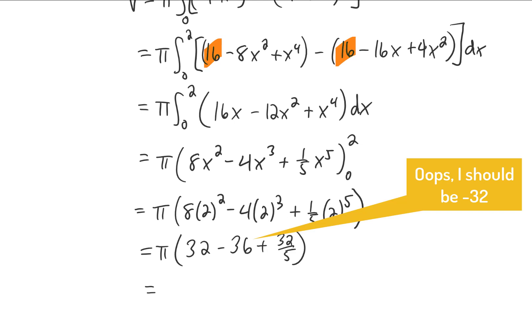32 minus 36 is negative 4. And if we subtract 4 from 32 fifths, we should get 12 fifths pi as our final answer. That is our volume, so that would be in units cubed.